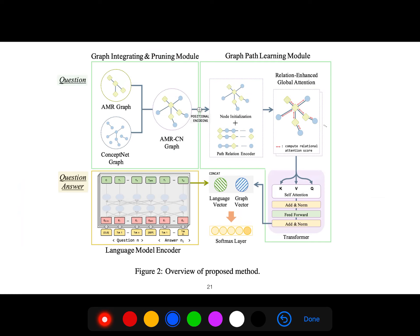So this is the overall proposed. We concatenate the language vector with the graph vector and you get the probabilities.